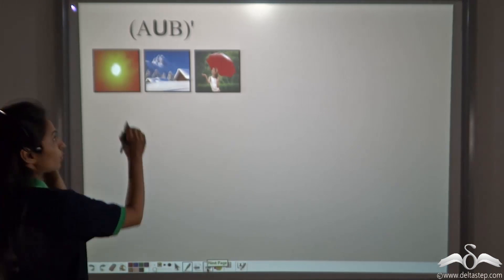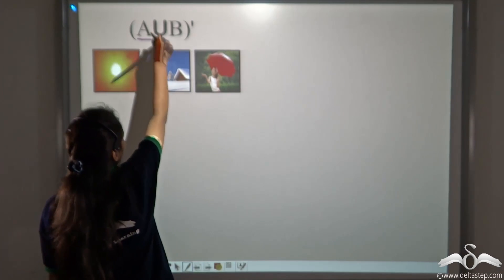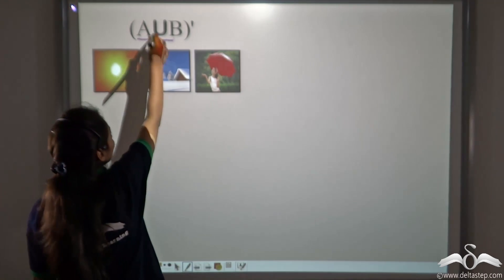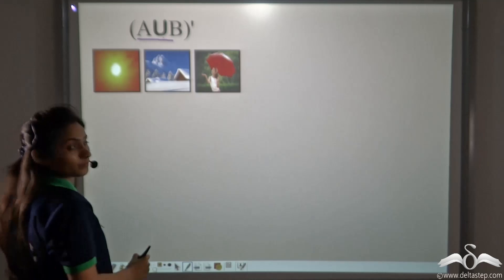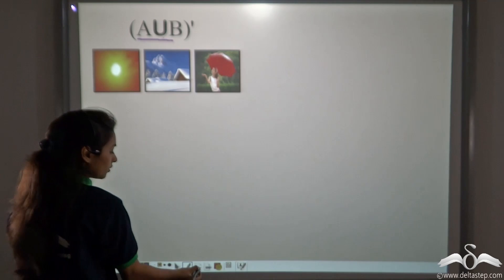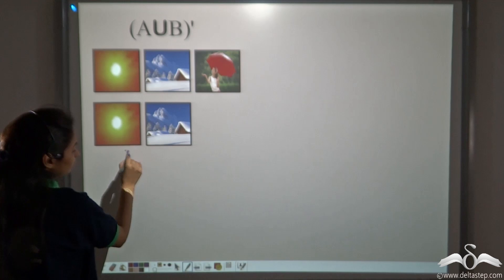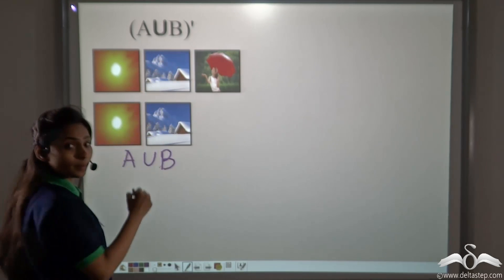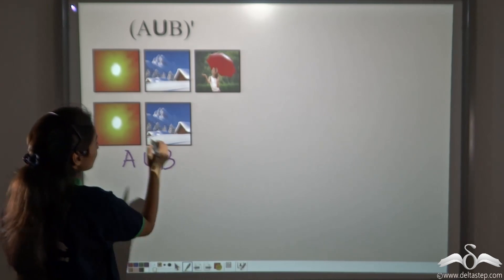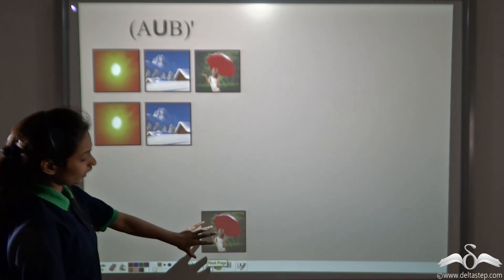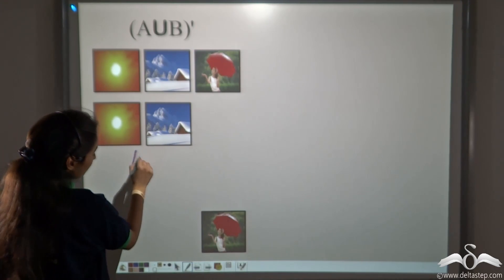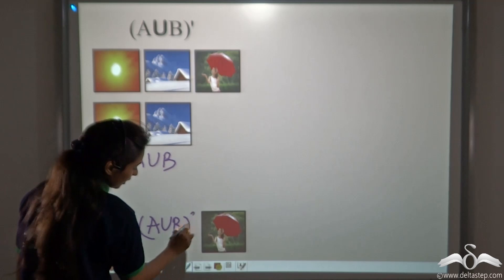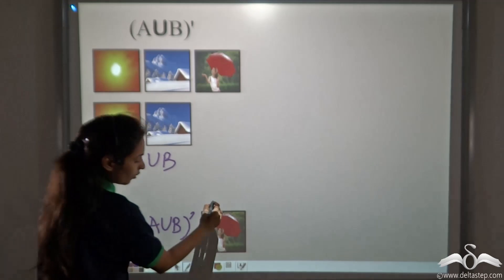The teacher said let's check both answers. She took the first answer: A union B whole complement. A union B means summer and winter both together. The complement of that means a season that is neither summer nor winter. So A union B whole complement gives us the rainy season.